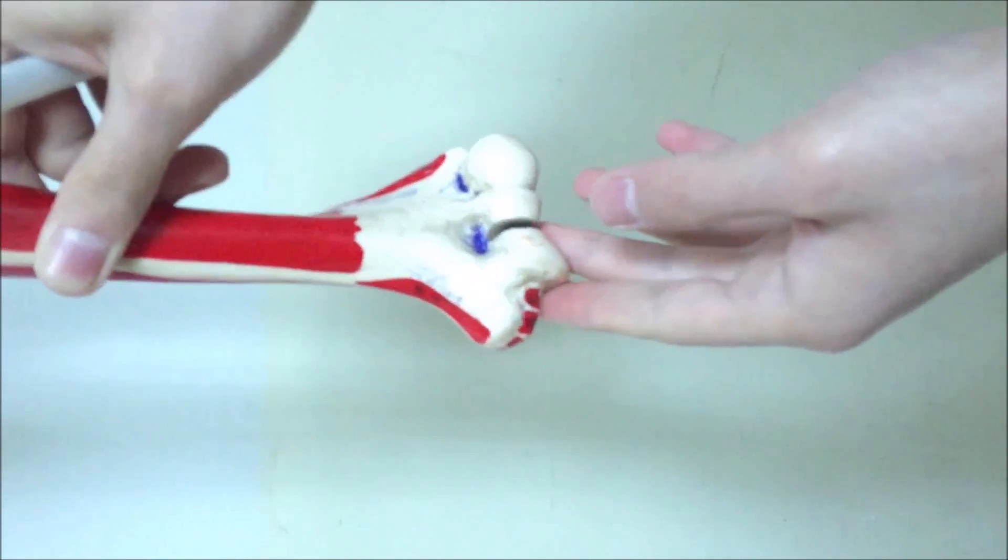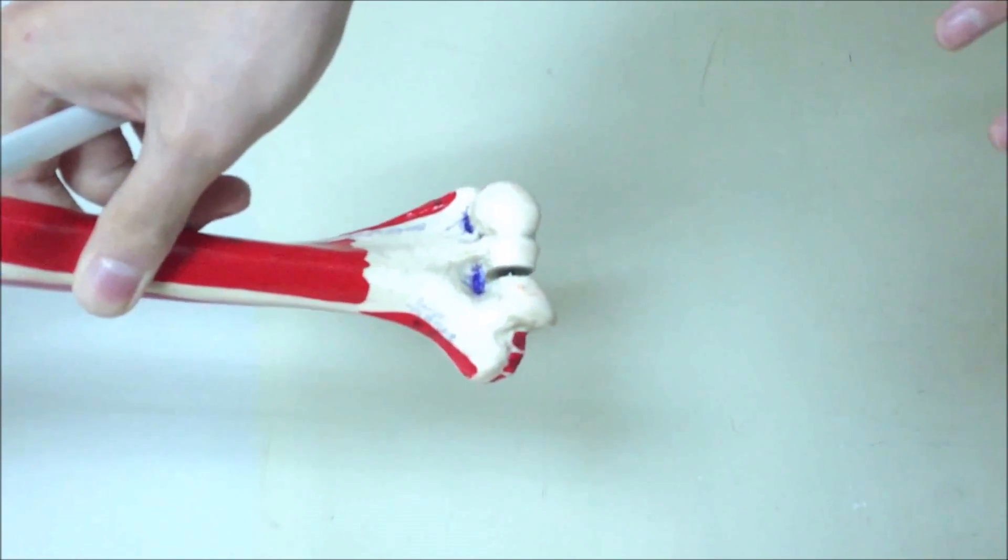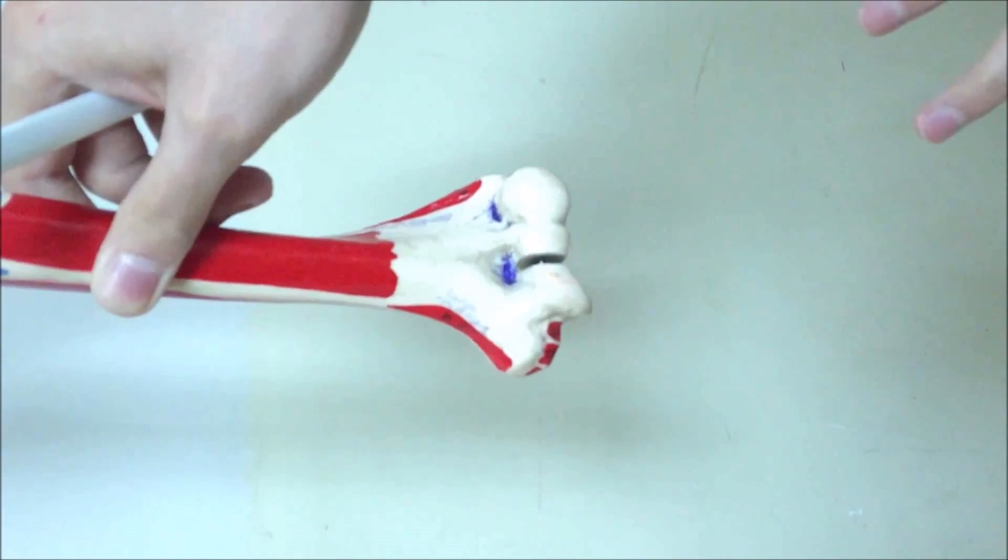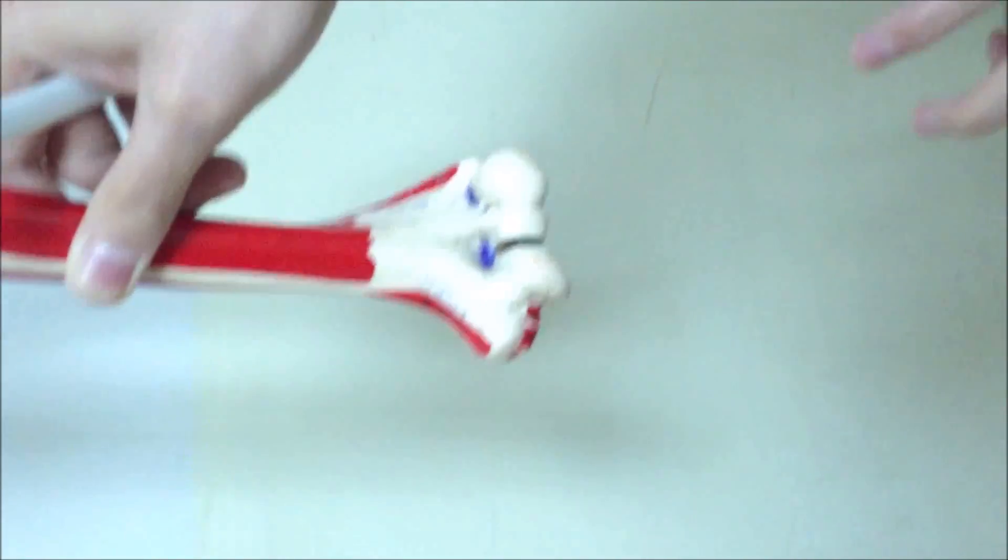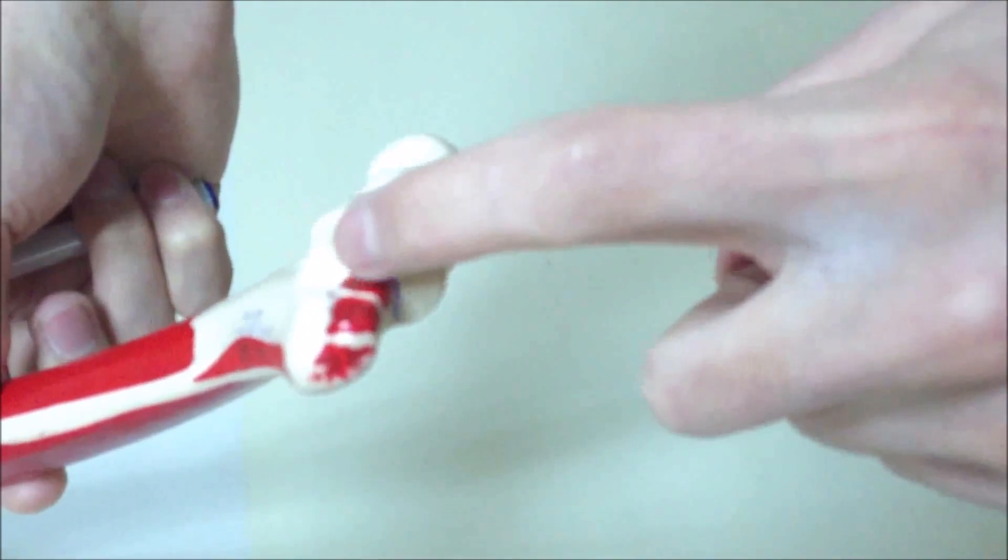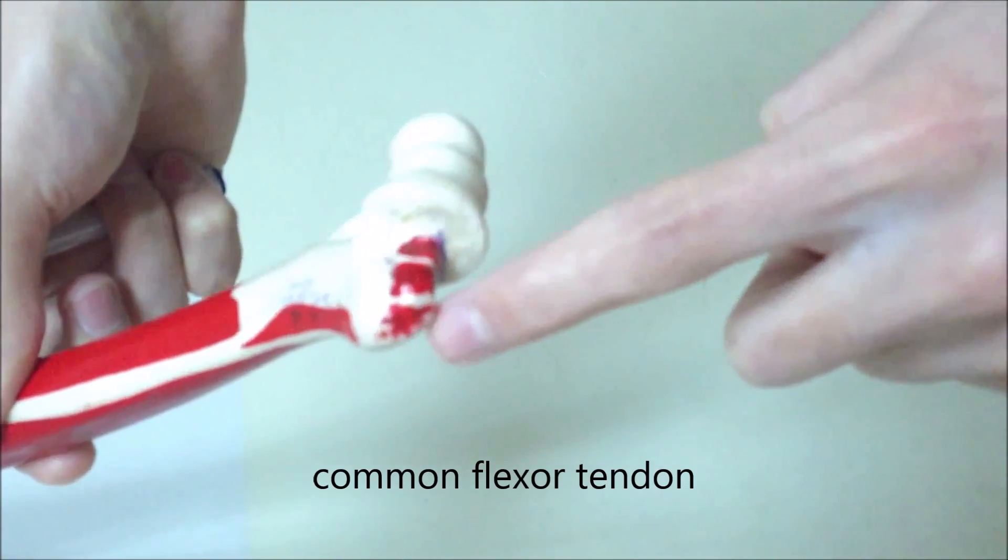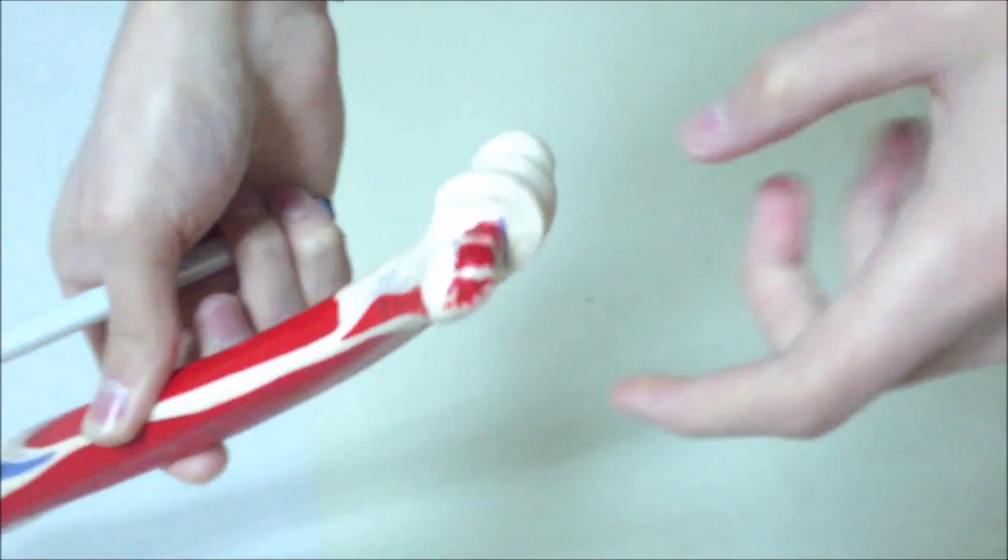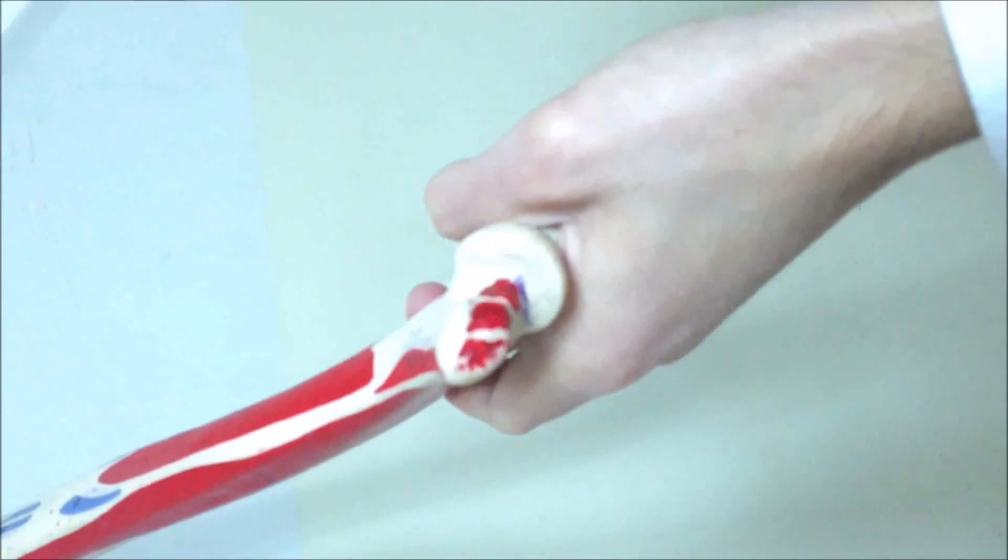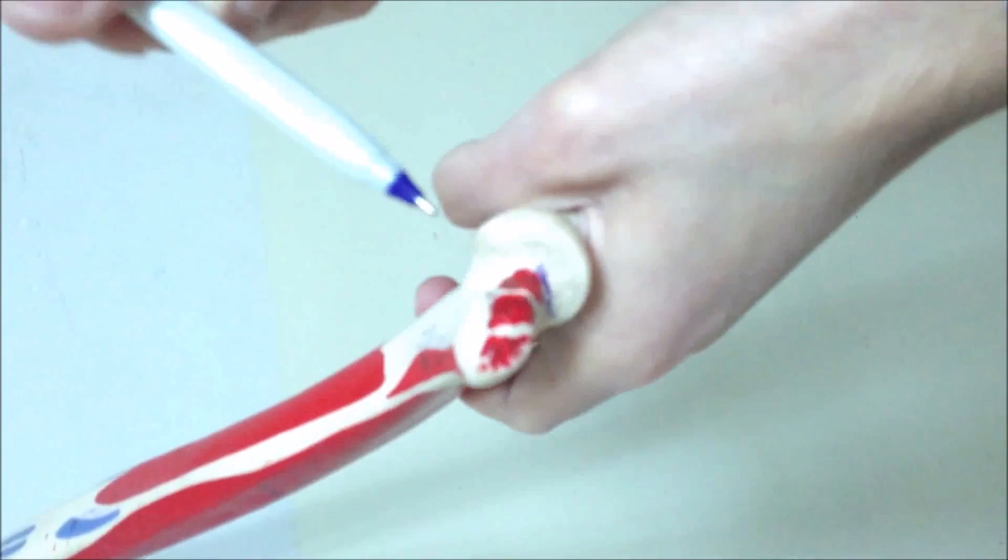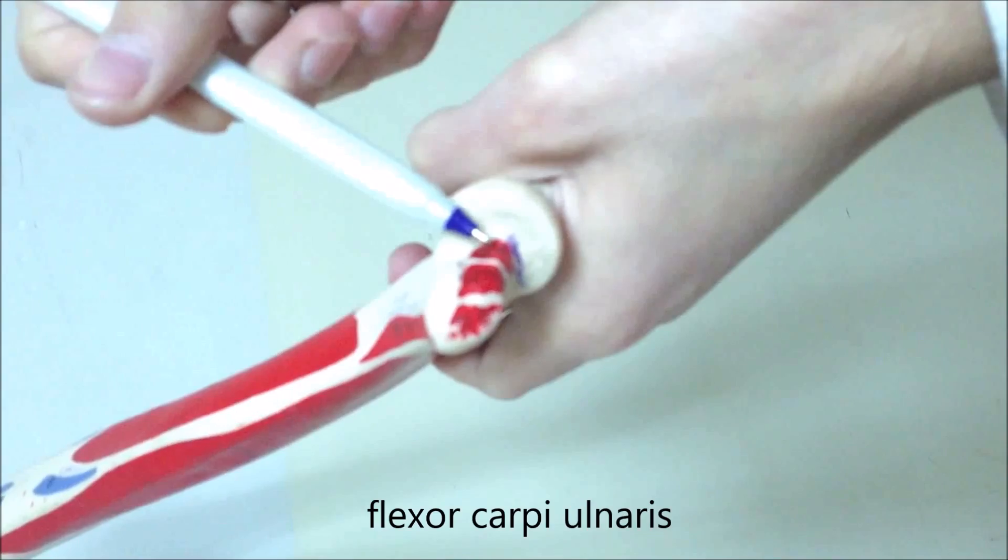From the medial epicondyle, it has three muscles. This is palmaris longus. Flexor digitorum superficialis. Flexor carpi ulnaris.